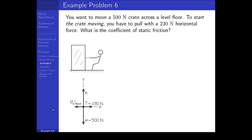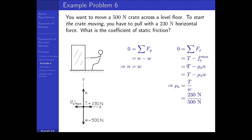We draw a standard coordinate system aligned with our forces and apply Newton's laws. In the y direction, the normal force equals the weight because there's no vertical acceleration. In the x direction, there's no horizontal acceleration, so we have a positive tension force and a negative Fs max. Since Fs max equals mu sub s times the normal force, and the normal force equals the weight, the coefficient of static friction equals tension divided by weight: 230 newtons divided by 500 newtons equals 0.46. Pull until the object is just about to slide, and that force divided by the weight gives the coefficient of friction.